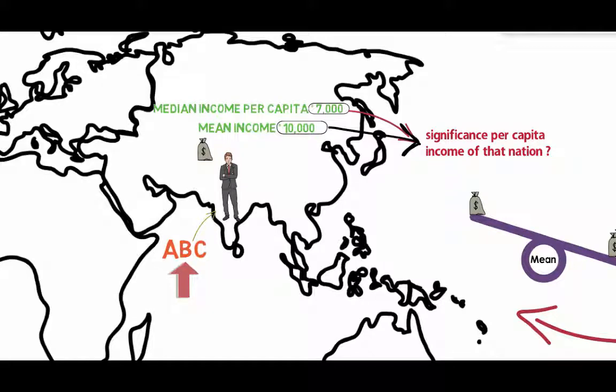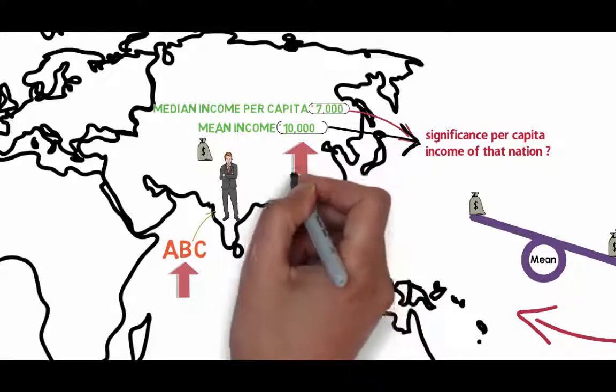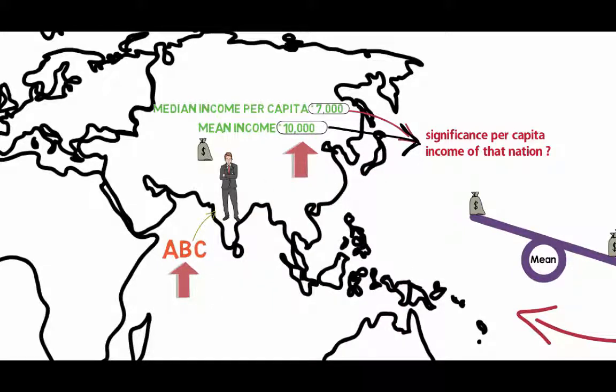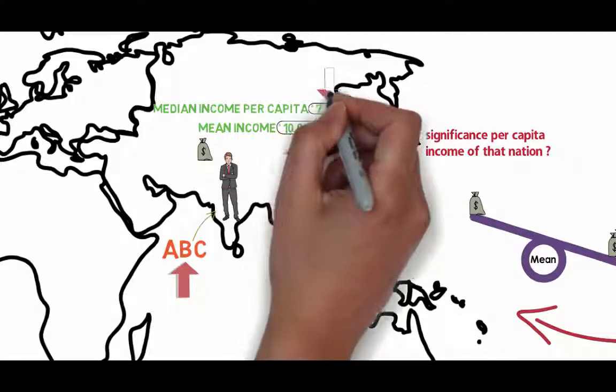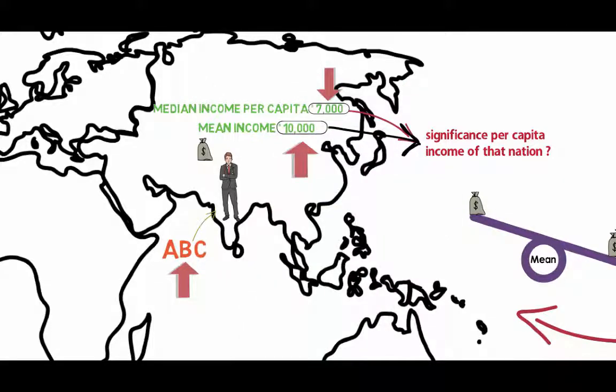The figure of the mean tells us that on an average, an individual in ABC earns 10,000. However, as we know that the mean is not a resistant measure and the presence of extreme values would vary it drastically, the median would give us a better picture in this scenario.